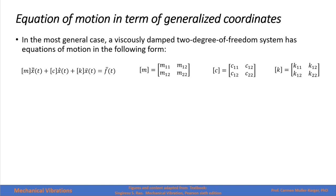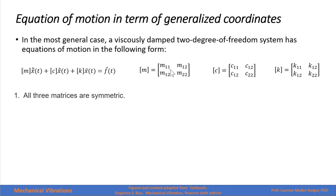In the most general case for linear systems, a viscously damped two degrees of freedom system has the equation of motion of the following form. This is a matrix equation of two degrees of freedom: this is the matrix for the mass, this is the matrix for the damping, and this is the matrix for the stiffness. All those matrices are symmetric, so these corresponding off-diagonal terms are equal.